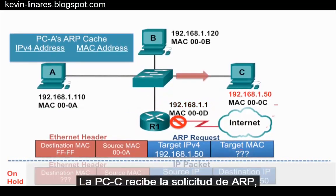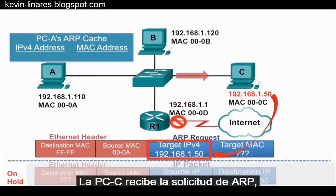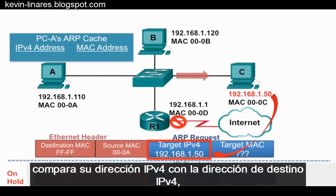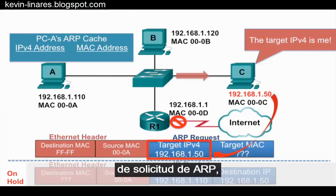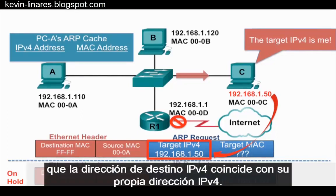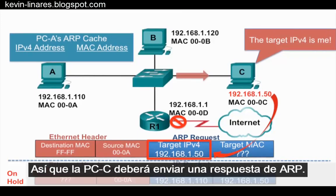PCC receives the ARP request and compares its IPv4 address against the target IPv4 address. It notices that it is the intended target — that the target IPv4 address does match its own IPv4 address. So PCC will need to send an ARP reply.